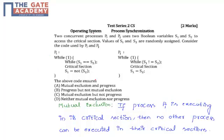The above code ensures: option A - mutual exclusion and progress; option B - progress but not mutual exclusion; option C - mutual exclusion but not progress; option D - neither mutual exclusion nor progress. We have to find whether these two processes ensure a solution to the critical section problem or not.